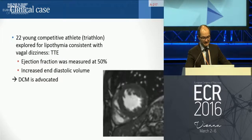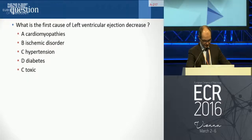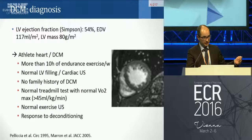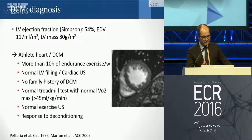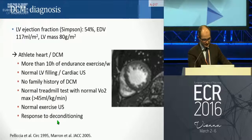The same differentiation applies with competitive athletes — for example, a triathlete experiencing lipothymia with a low ejection fraction where dilated cardiomyopathy was advocated. Intense physical activity can give not only hypertrophy but also dilatation of the myocardium, especially with endurance exercises. Criteria to separate athlete heart from DCM include remodeling if activity exceeds 10 hours of endurance exercise per week, normal LV filling, no familial history of DCM, normal exercise test, and normal response to deconditioning.